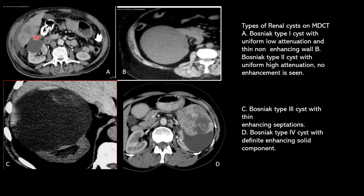Bosniak Type 1 is a uniform low attenuation, non-enhancing wall. Type 2 is a cyst with uniform high attenuation and no enhancement. Type 3 is a cyst with thin enhancing septations. Type 4 is a cyst with a definite solid enhancing component.